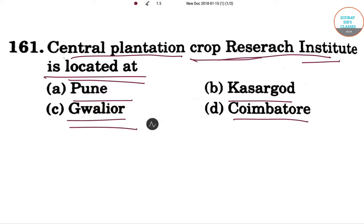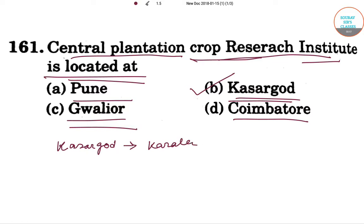The answer will be option B, that is Kasargod. This Kasargod is located in Kerala. It was established in 1916 by the Government of Madras.